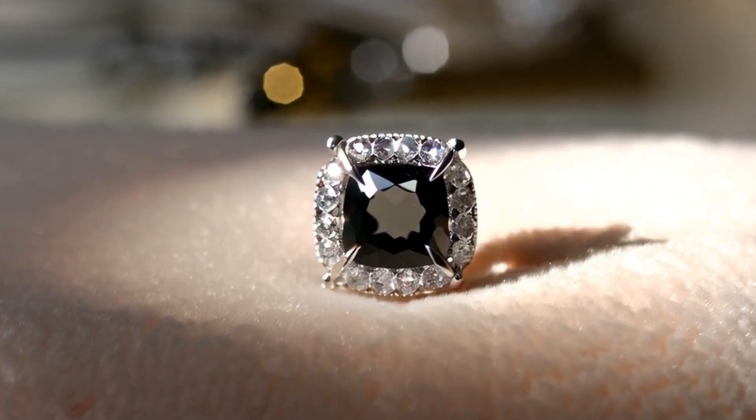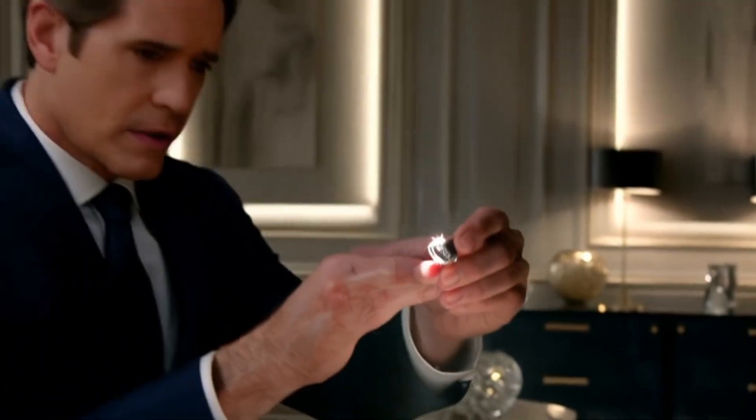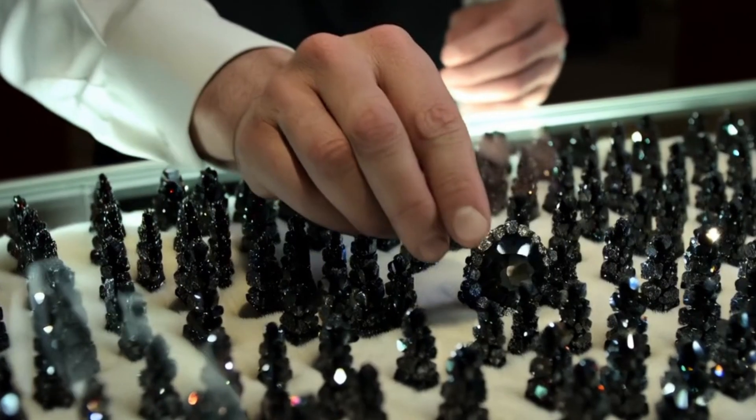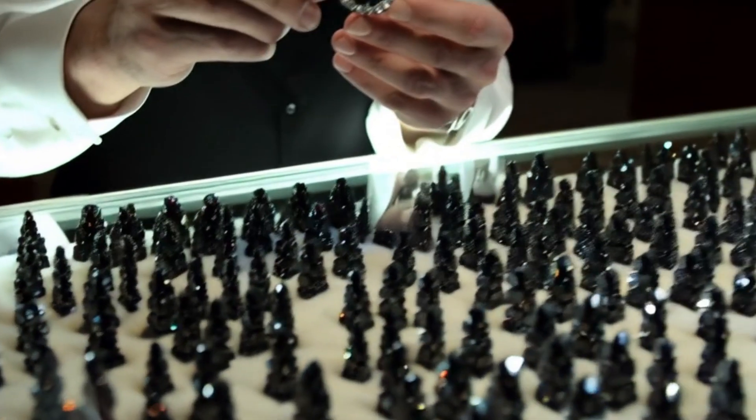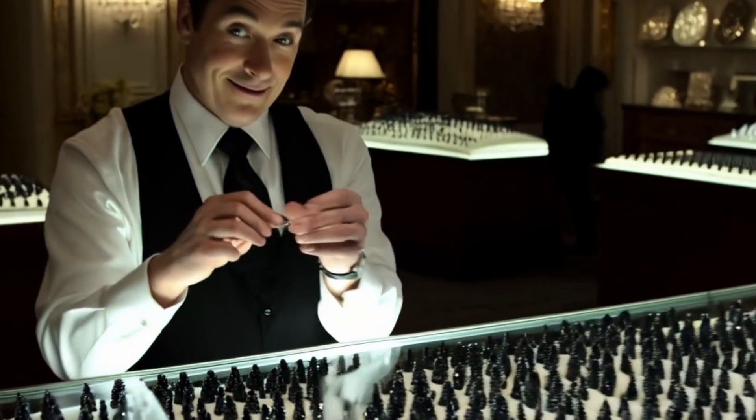Number three, hardness scratch test. Diamonds are the hardest natural material on earth, ranking 10 on the Mohs scale. Real diamonds can easily scratch glass, quartz, or metal without being damaged. Fakes may get scratched, chipped, or damaged when rubbed against harder surfaces. Caution, this test can damage softer stones, so do it carefully.